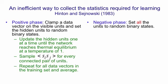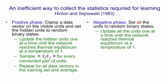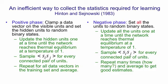Then in the negative phase, you don't clamp anything. The network is free from external interference. So you set all of the units, both visible and hidden, to random binary states. And then you update the units one at a time, until the network reaches thermal equilibrium at a temperature of one, just like you did in the positive phase. And again, you sample the correlation of every pair of units i and j.